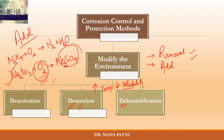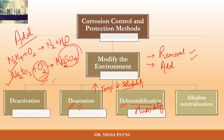The third type is dehumidification — again 'de' stands for removal, and obviously humidity. Here you reduce the moisture content of air to such an extent that the amount of water condensed on the metal is very small. You can use alumina or silica gel — like the silica gel pouches you see when you purchase something — which preferentially absorb moisture. In closed areas or shops, you can also use air conditioning along with alumina or silica gel.